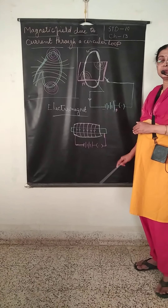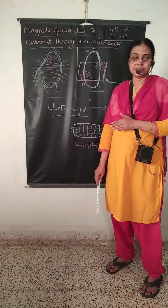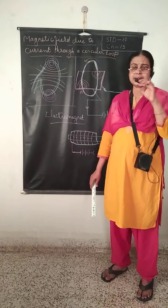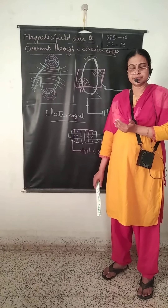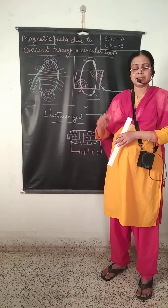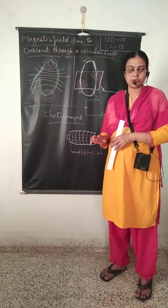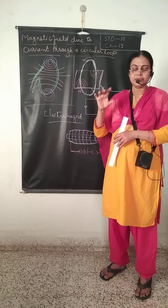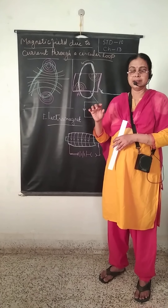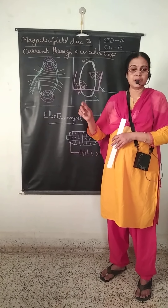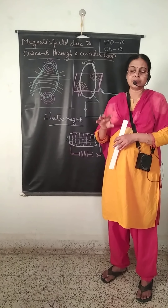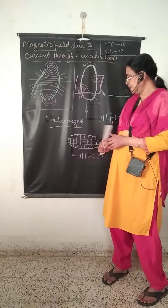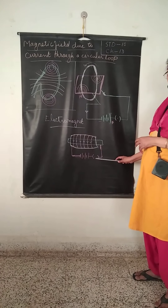Now let us discuss about the solenoid. A solenoid has a cylindrical core made up of soft iron in which copper wire is wound over it. This solenoid can become a temporary magnet when it is connected with a battery and a key.